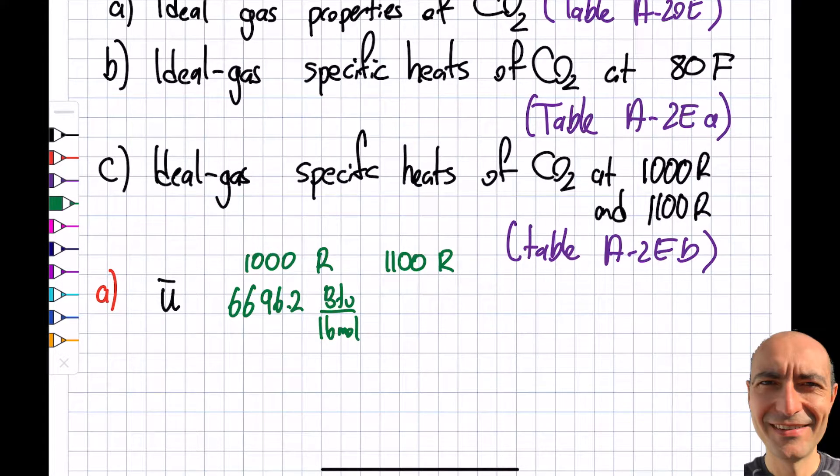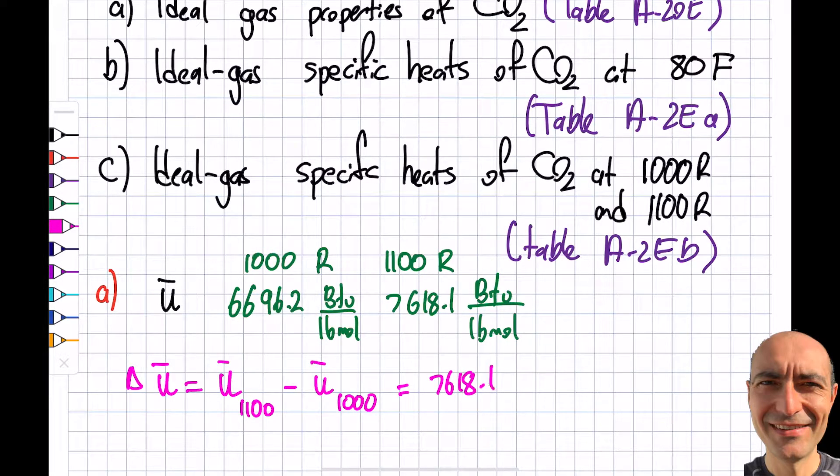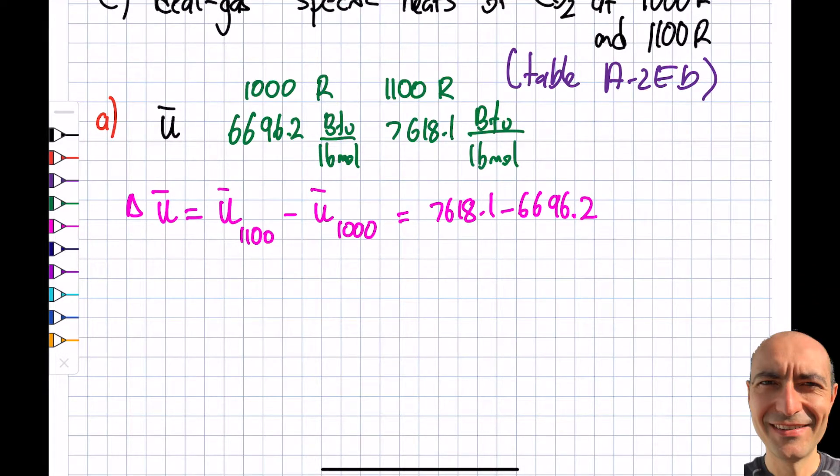If I go ahead and do it for 1100, I get 7618.1 BTU per pound mole. Note what I did here - this is listed as a function of pound mole, not pound mass. You can actually leave the answer in BTU per pound mole. Delta u will be u at 1100 minus u at 1000 Rankine, so I get 7618.1 minus 6696.2.